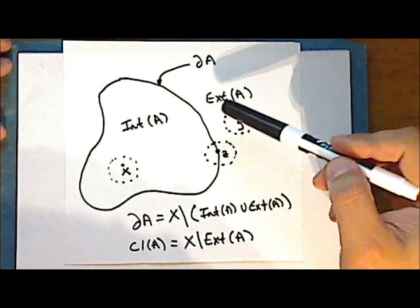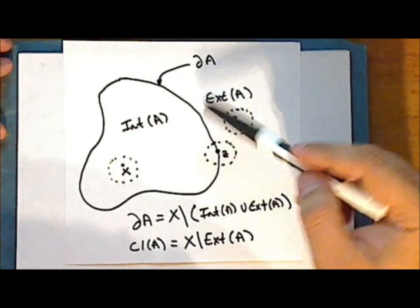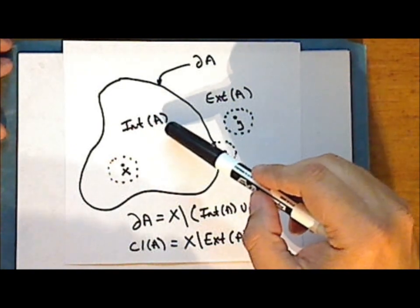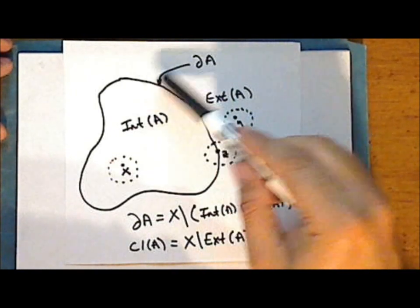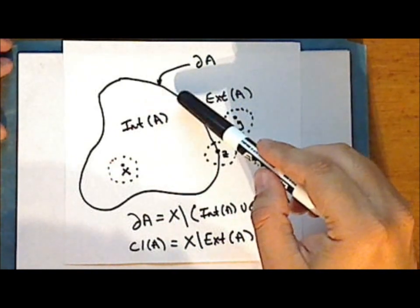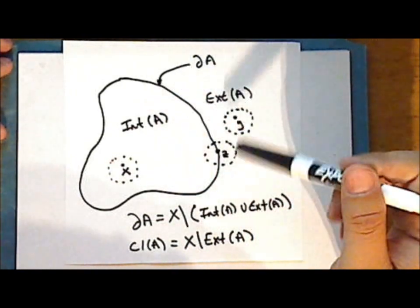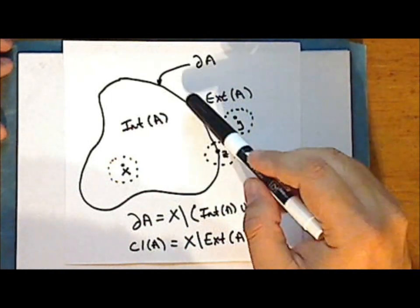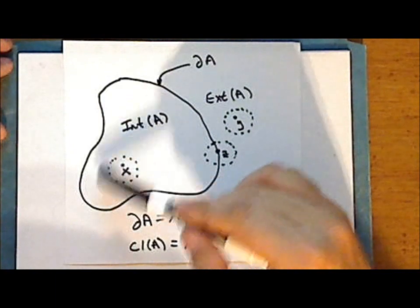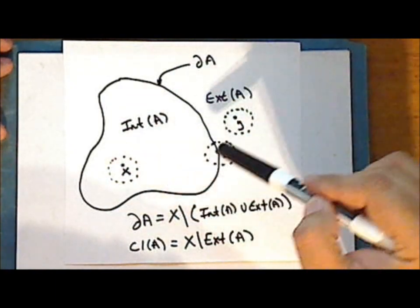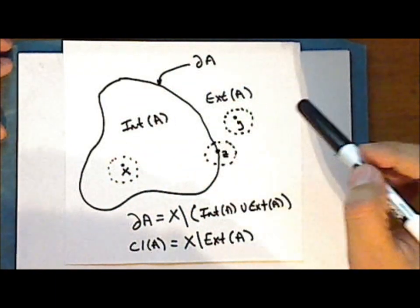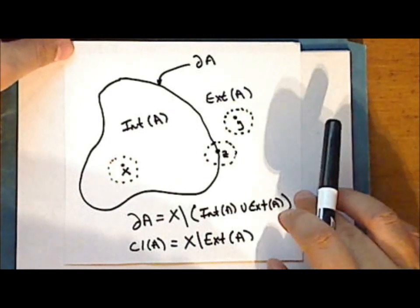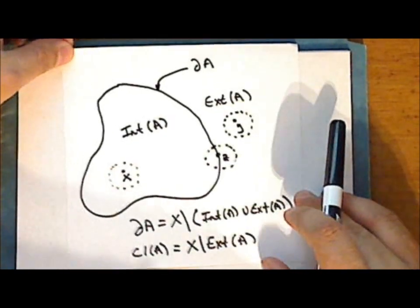In the last lecture I made the claims that the interior of a given set A is everything inside the boundary of A but not including the boundary itself, and that the closure of a given set A is everything on the boundary and interior to the boundary. I'll start this lecture by proving a lemma that makes these claims more mathematically precise.